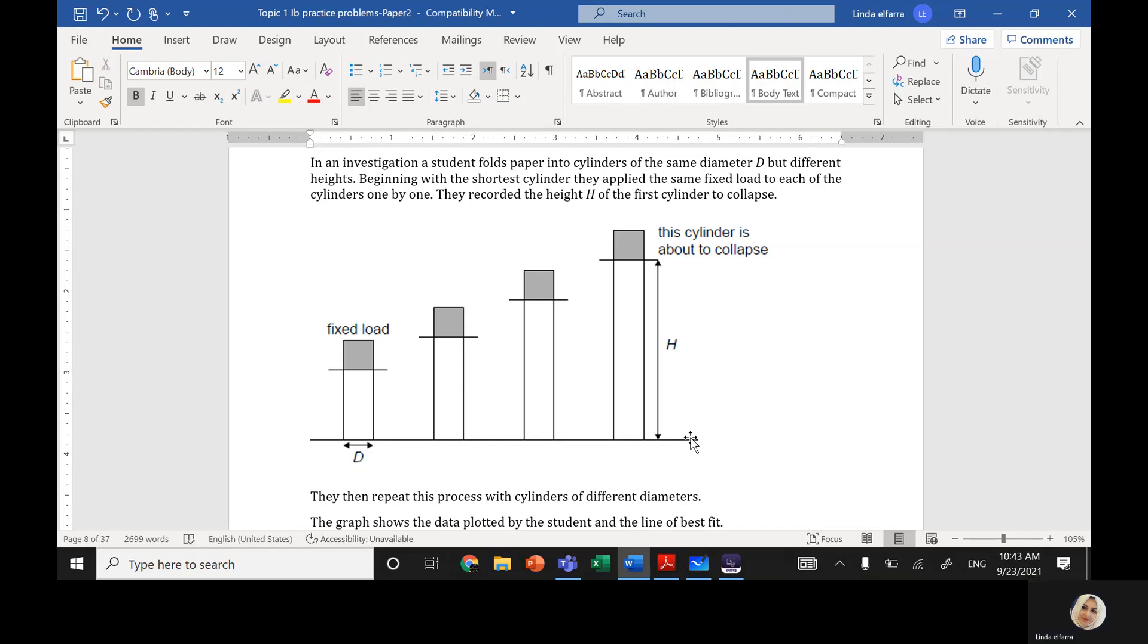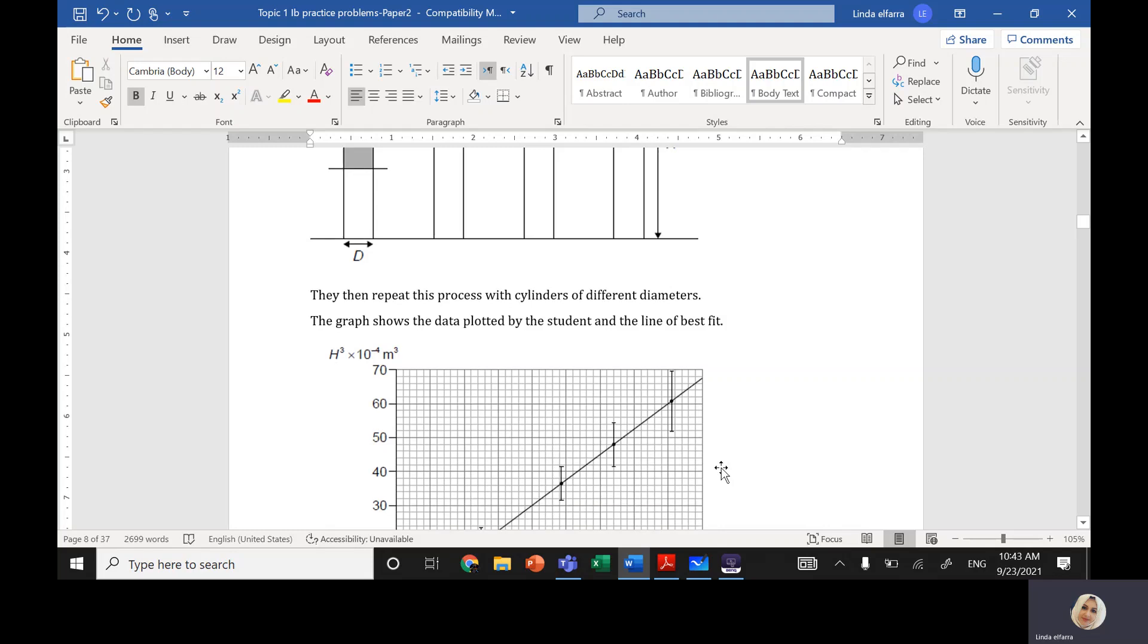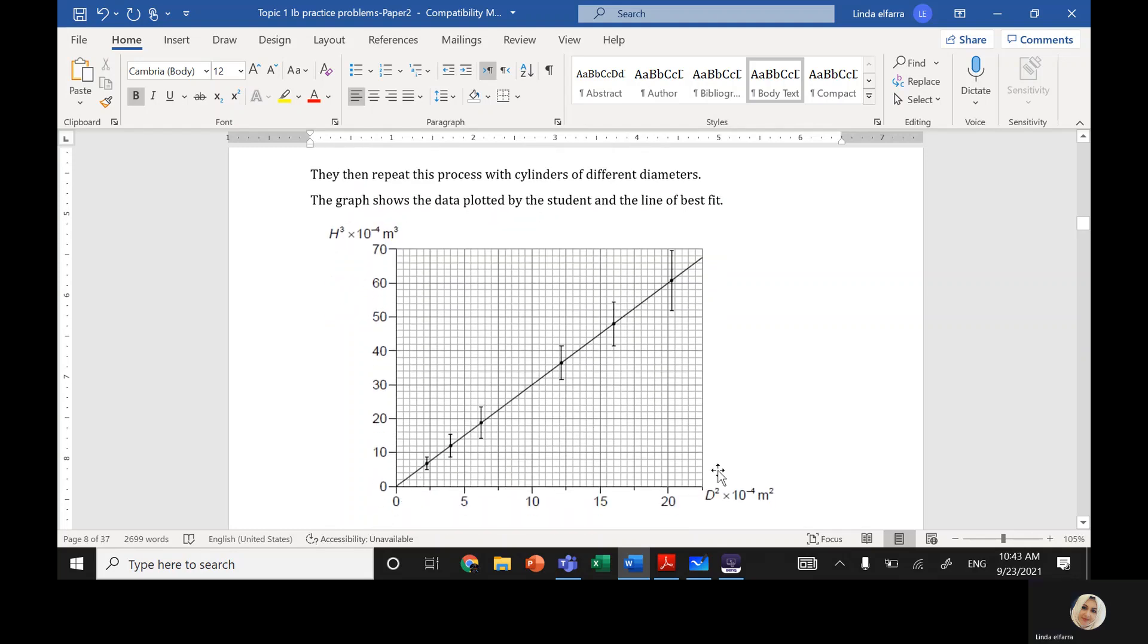Then he repeated the same process with cylinders of different diameters. After that, he drew a relationship between the height of the cylinder cubed versus the diameter of the cylinder squared, in meters. His measurement gave a straight line.